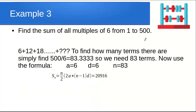Here's another good question: find the sum of all multiples of 6 from 1 to 500. First, find how many multiples of 6 there are below 500: 500 ÷ 6 = 83.33, so there are 83 terms. The last term is 83 × 6 = 498. With first term a = 6, common difference d = 6, and n = 83 terms, plug these into the sum formula Sₙ = (n/2)[2a+(n−1)d] to get 20,916.